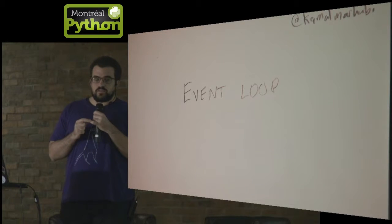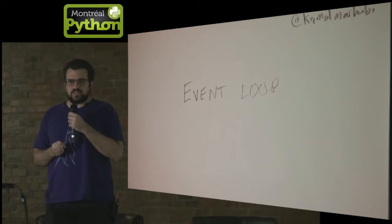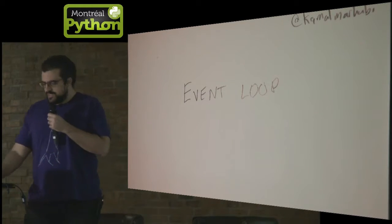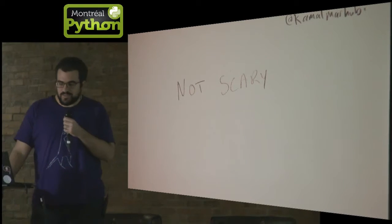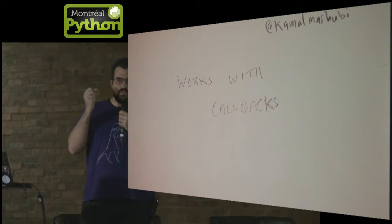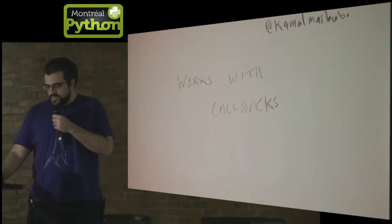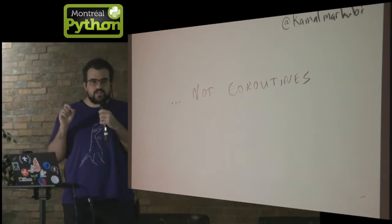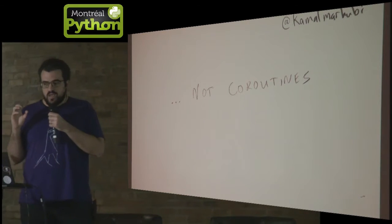It uses an event loop. An event loop is what, to me, two or three weeks ago was a very scary word. I know JavaScript has an event loop. But then after looking at the source code for a couple of hours — well, actually, it's not that scary. The event loop works with callbacks. And a callback is just a function. You give a callback — a function — to the event loop for it to call at some time, and it will call it for you later. So it doesn't directly work with coroutines, and we'll come back to that in a little bit. This is more about the guts.